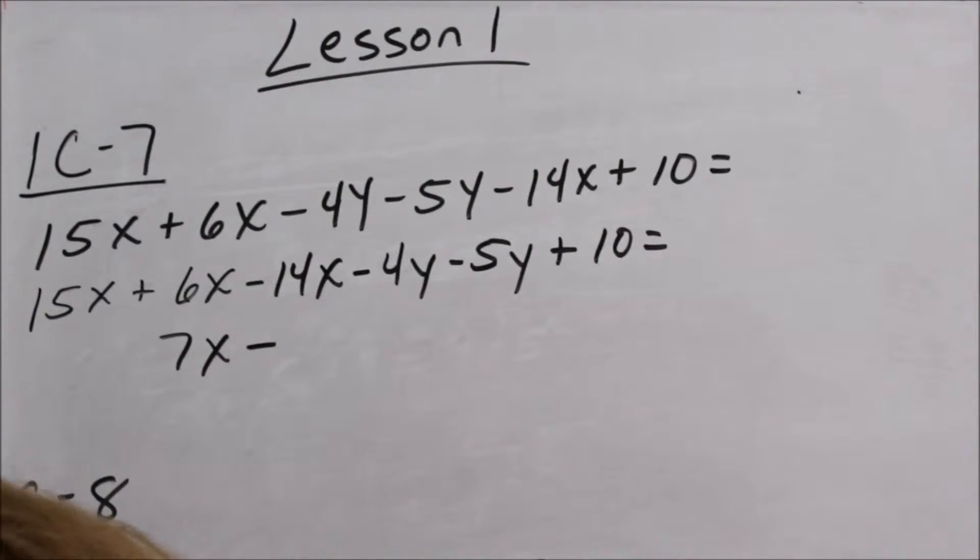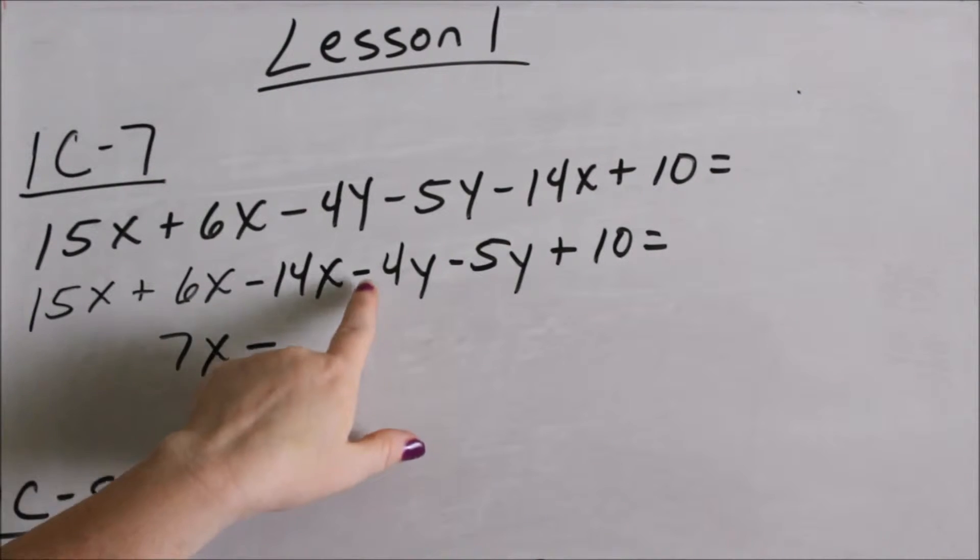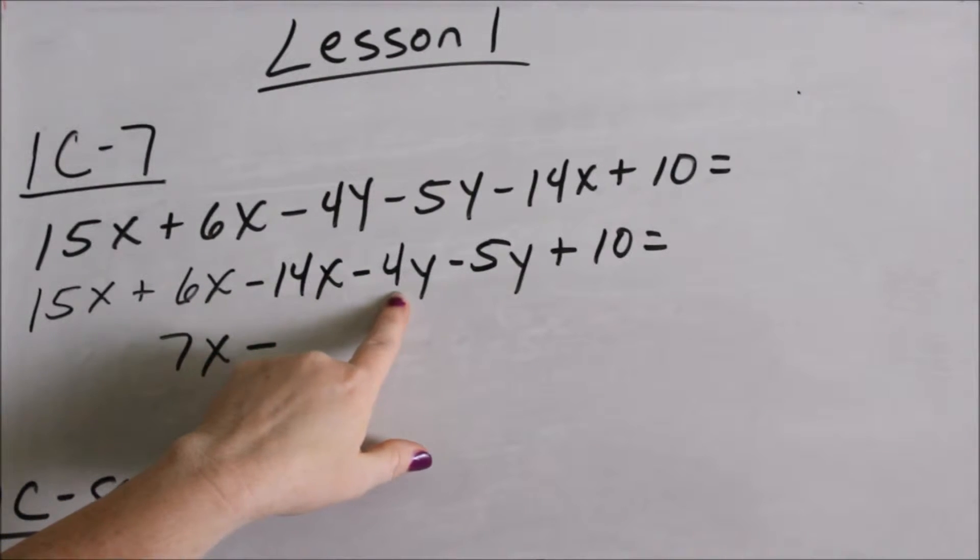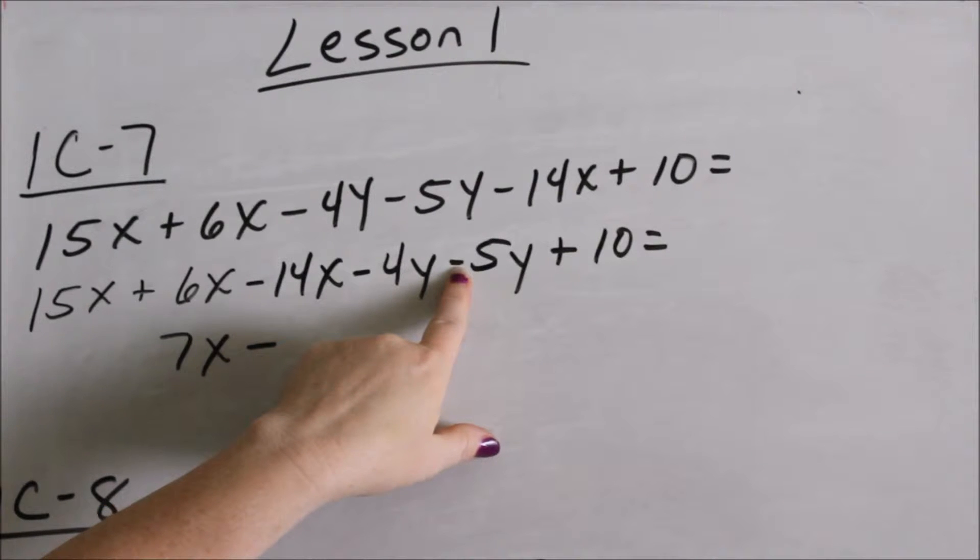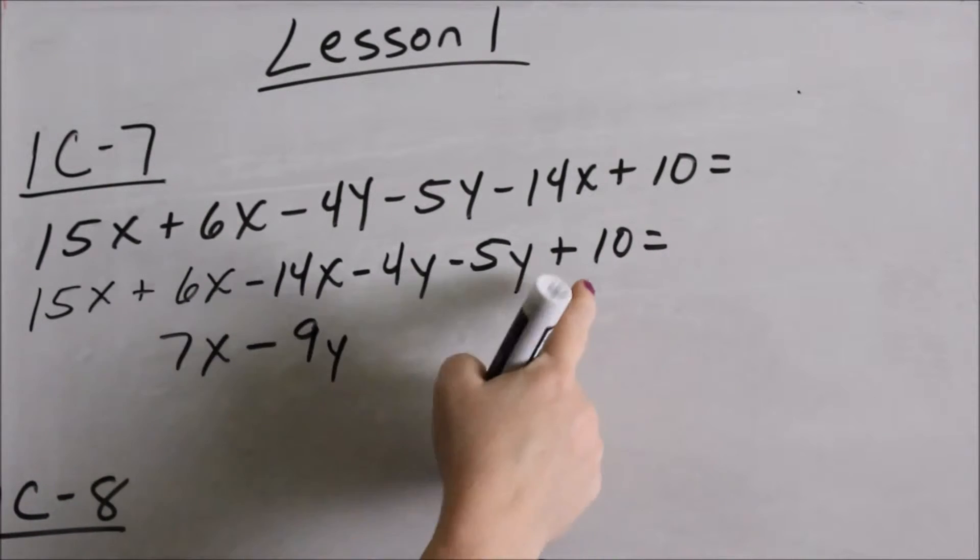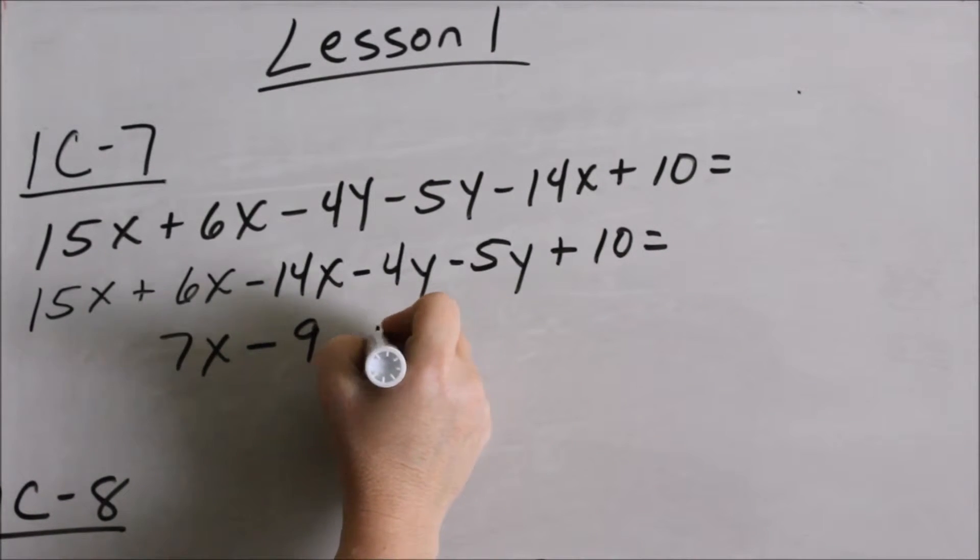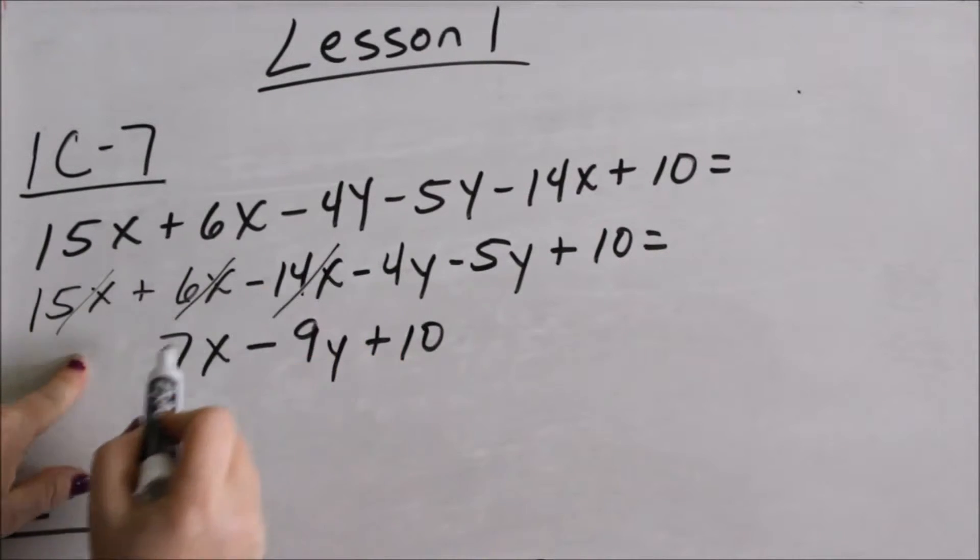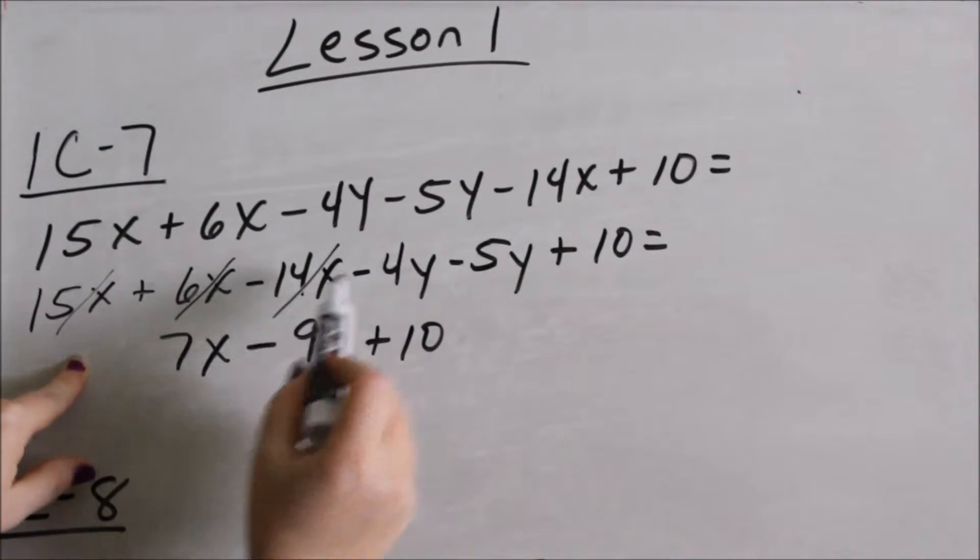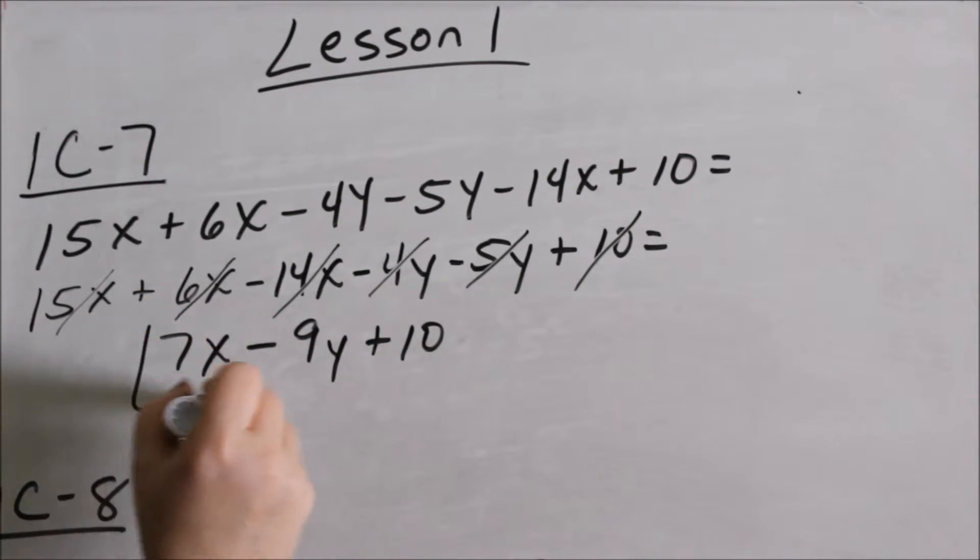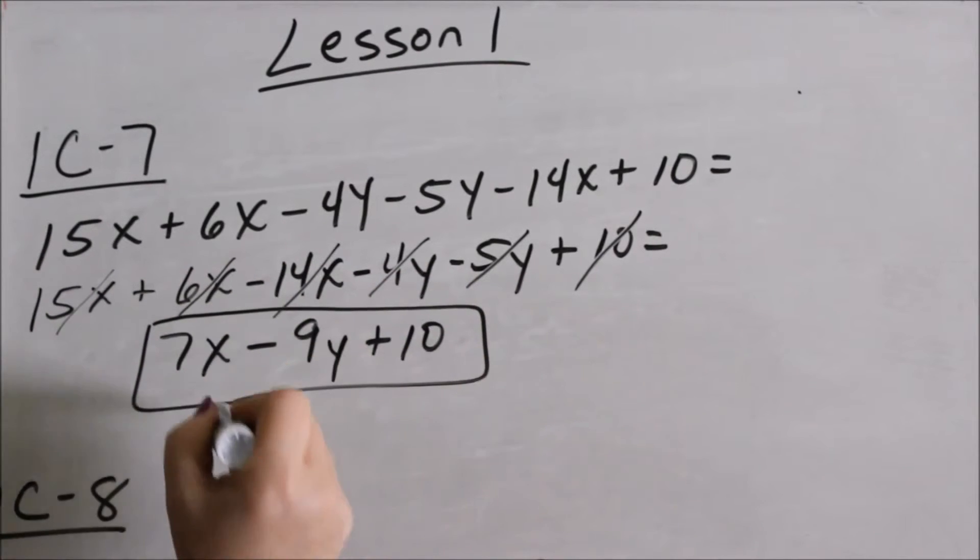Now combining our Y's. If I have a negative 4Y, and then I'm adding a negative 5Y, I got into debt 4, now I get into debt 5 more. I am more into debt, so I am now a total in debt of 9Y's. There's nothing to add to my 10's. If it makes you feel better to cross something out as you do it, because then you know you took care of that term, then there's no other whole numbers to add to my 10. So this is as much as simplifying that I can do.